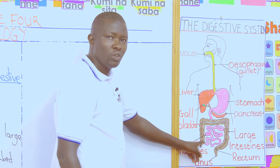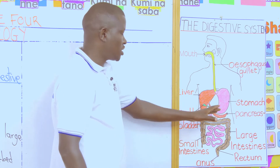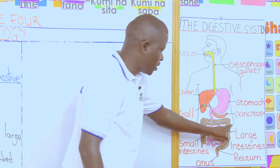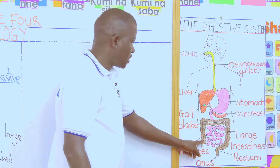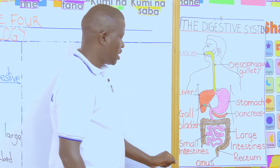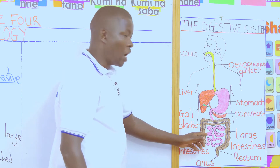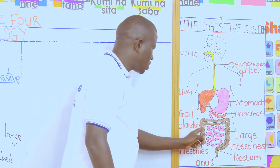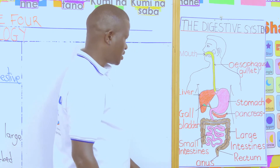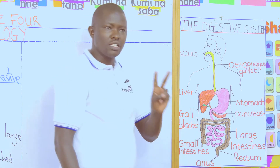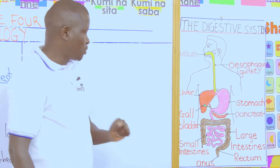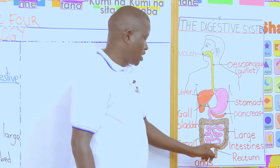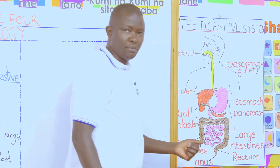The small intestines are joined with the large intestine. From here, the large intestine continues all the way down. The undigested and unabsorbed food now goes into the large intestines. The large intestine is divided into two parts: the longest part is the colon, and the smaller part is the rectum.